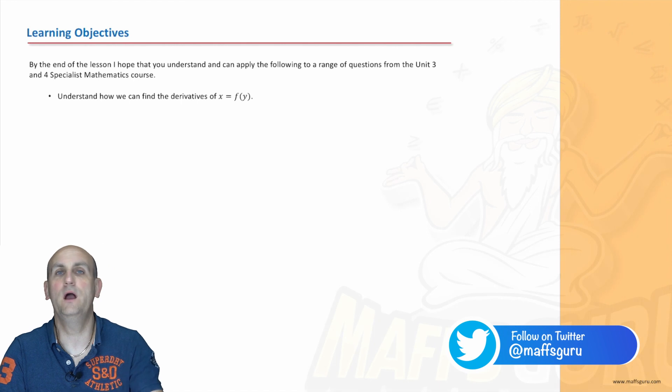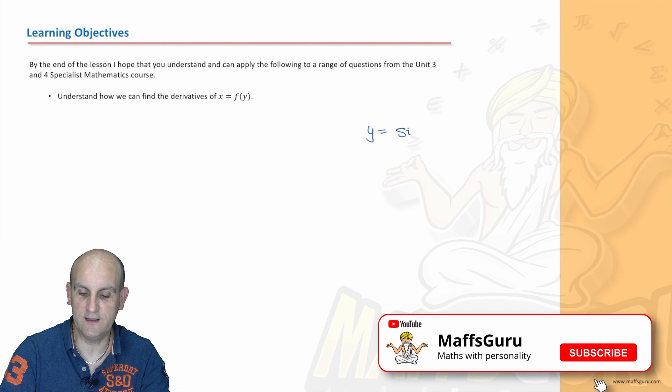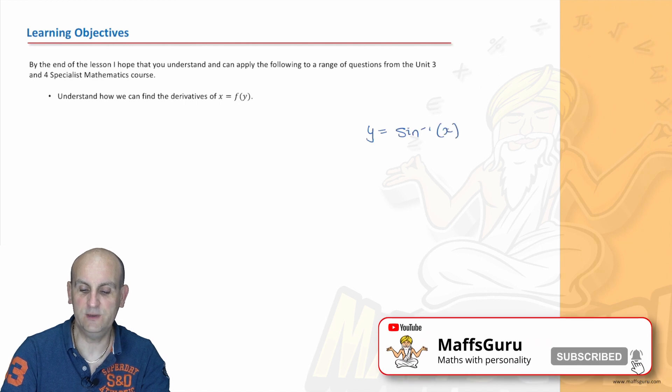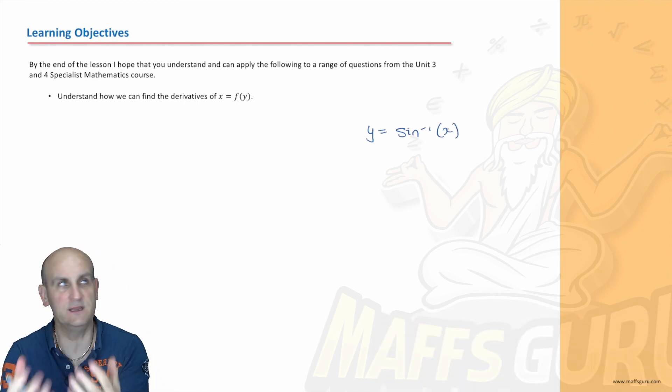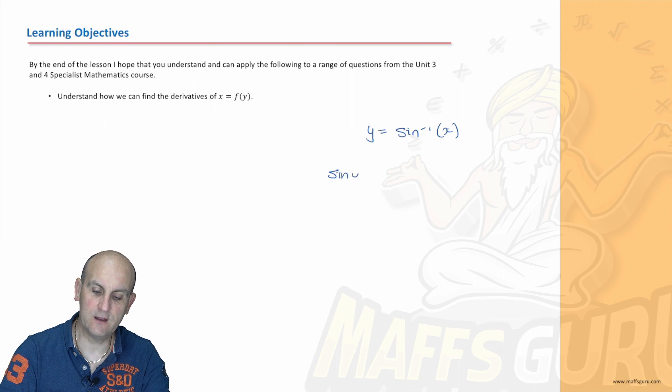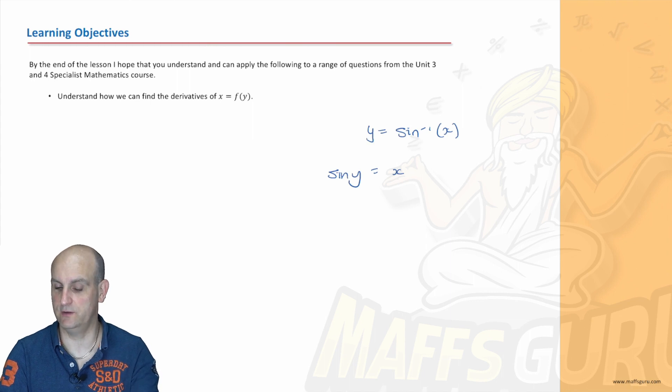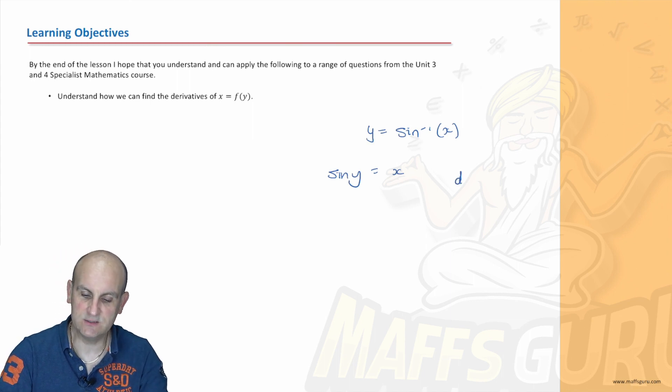And you might be saying, well, why on earth would we want to do this? Well, if we go to something like y is equal to sine to the minus one of x, we know that that is a funky graph. We've made it in previous videos. But how would we differentiate it? At this moment in time, we don't know how to differentiate an inverse sine function. But what if we could rethink the question? What if we actually had sine of y equals x? Well, we know that sine can differentiate because we've known that. But that would suggest then that in this situation, we'd be doing dx by dy.